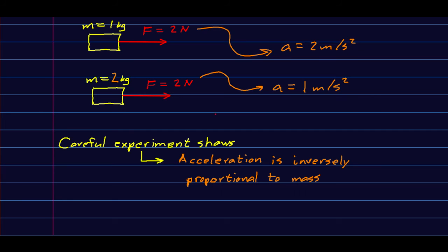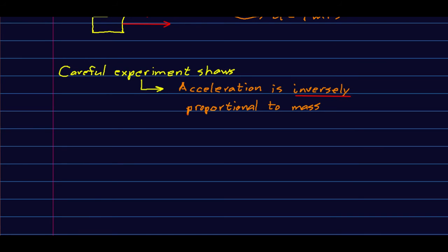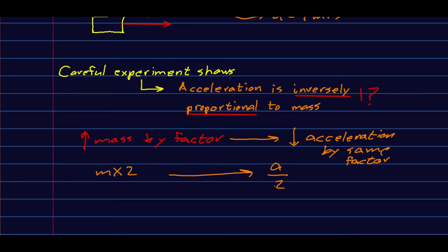So the experiment you just did shows that when you decrease the mass, if you keep the force the same, the acceleration increases. Now, it takes a more careful experiment to show that the acceleration is inversely proportional to the mass. Well, what does inversely proportional mean? It means that when you increase the mass by some factor, then this leads to a decrease in the acceleration by the same factor. So in other words, if you double the mass, then that means the acceleration is divided by two. If you divide the mass by three, then you triple the acceleration.